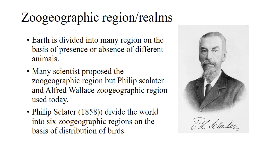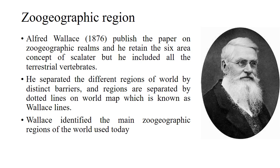Many scientists propose zoogeographic regions. Some scientists divide the world into 28 zoogeographic regions. But Philip Sclater's and Alfred Wallace's zoogeographic regions are used today. Philip Sclater divides the world into 6 zoogeographic regions on the basis of distribution of birds. Alfred Wallace published a paper on zoogeographic realms and retained the 6-area concept of Sclater.